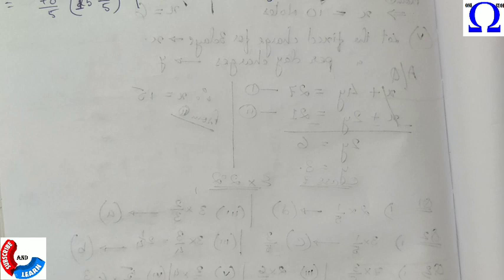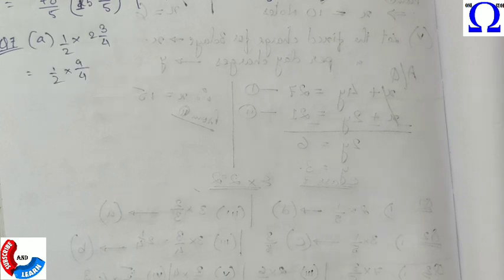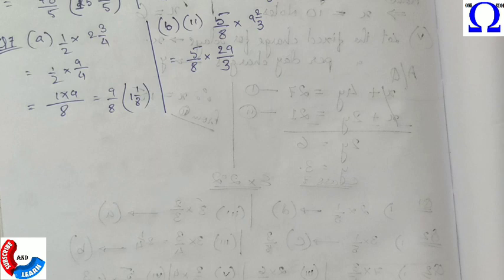I don't think there should be any doubt left. Still, if you did not understand any part, please comment. The numerator will be multiplied with numerator and denominator will be multiplied with denominator. So our answer is 1 and 1 by 8. Again we will be doing the same thing.